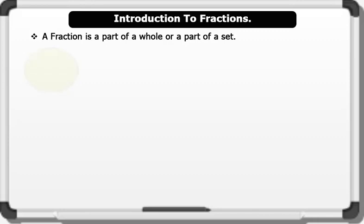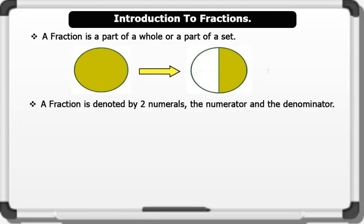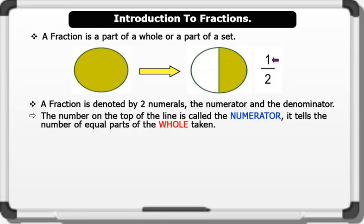This means that a fraction involves a whole that is divided into two or more equal parts. A fraction is denoted by two numerals, called the numerator and the denominator. The number on the top of the line is called the numerator. It tells the number of equal parts of the whole taken.